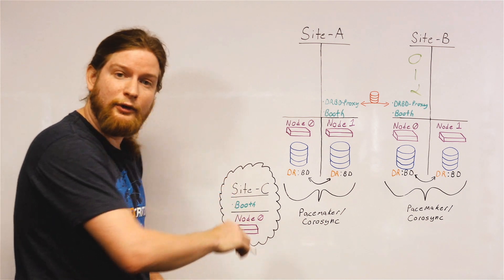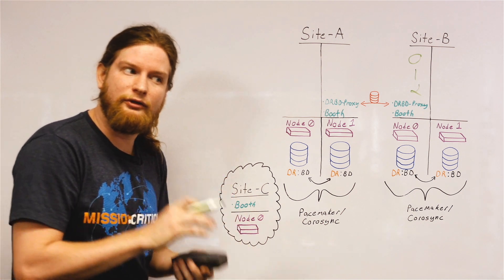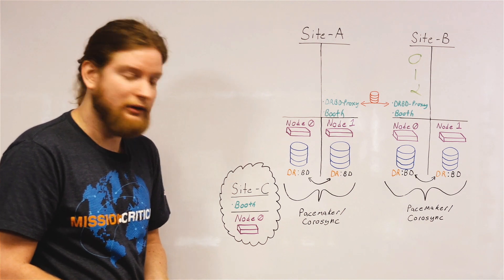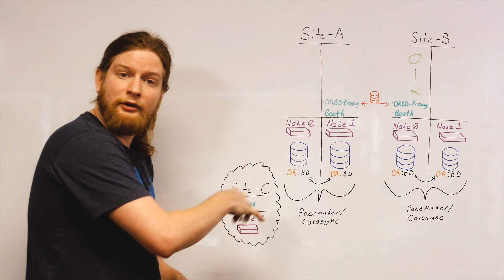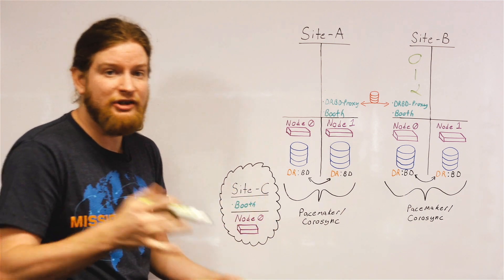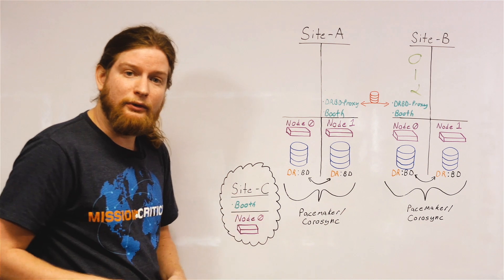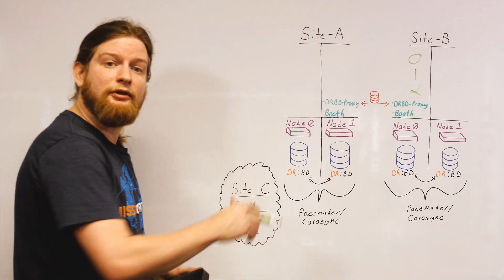Site C is running a version of Booth that is a stripped down implementation that only participates in votes. So even though site C may be running in some public cloud or very cheap instance, maybe even free, and is running on a single node, it participates in the geoclustering vote.